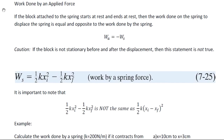As we saw with work done by gravity, if an object starts at rest and ends at rest, its change in kinetic energy is zero. By the work-kinetic energy theorem, net work equals the change in kinetic energy. So if the change in kinetic energy is zero, the net work is zero, meaning the work done by the applied force and the spring force add to zero — they are equal in magnitude and opposite in sign.